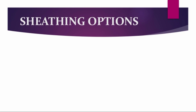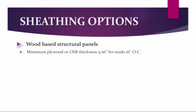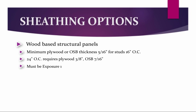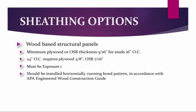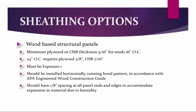The next sheathing option is wood-based structural panels. The minimum thickness for plywood or OSB is 5/16 of an inch when studs are 16 inches on center. When framing members are 24 inches on center, plywood is required to be 3/8 of an inch thick and OSB shall be 7/16 of an inch thick. Any wood-based structural panels used must be exposure one. All wood-based structural panels should be installed horizontally in a running bond pattern in accordance with the APA Engineered Wood Construction Guide, with 1/8 inch spacing at all panel edges and ends to accommodate expansion.